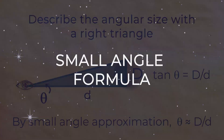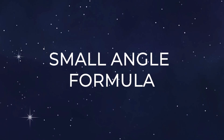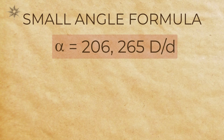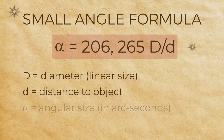Now let's look at the way astronomers typically write the formula to quantify this relationship — the small angle formula. This formula is a mathematical way to say: for a given diameter, the angular size decreases the farther away an object is. Here it is: alpha equals 206,265 times D over d. Capital D is the diameter or linear size, lowercase d is the distance, and alpha is the angular size in arc seconds.